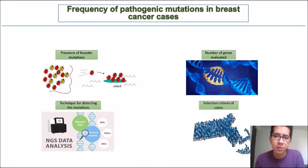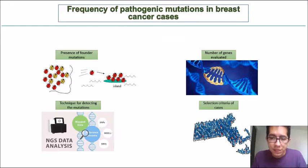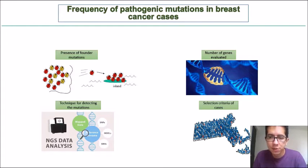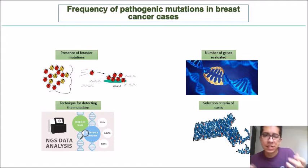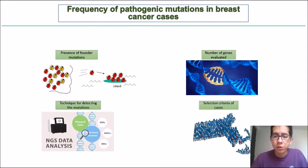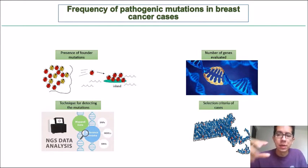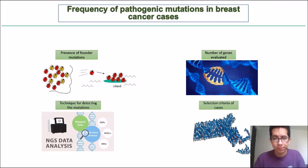The frequency of pathogenic mutations in breast cancer cases depends on several factors: the presence of other mutations, founder mutations arising from a common ancestor, the number of genes evaluated, the technique used for detection — with next-generation sequencing being the best approach — and the selection criteria of cases. Selecting women with a family history of breast cancer or an earlier age of onset gives a higher probability of finding pathogenic mutations.